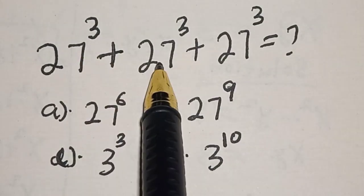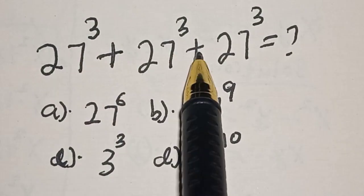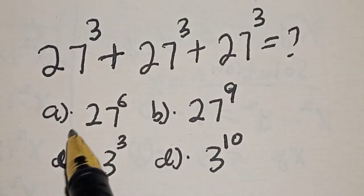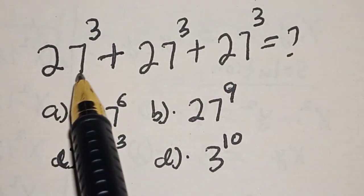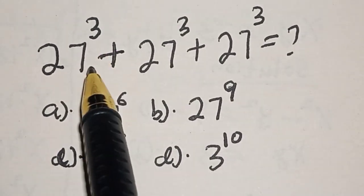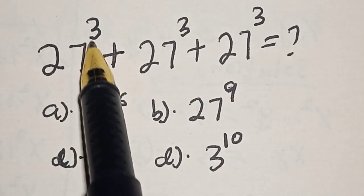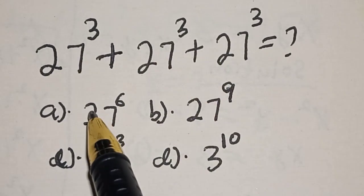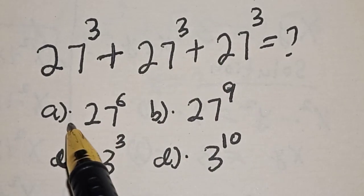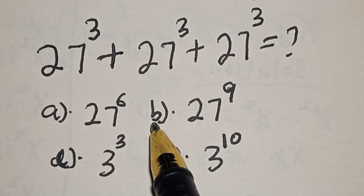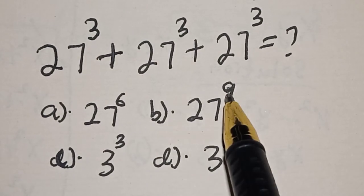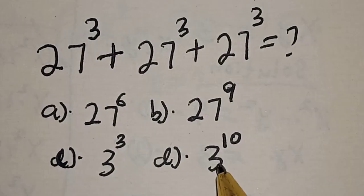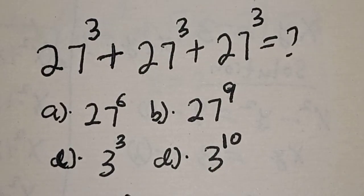Hi everyone, welcome to my class. In this class we want to evaluate this sum of powers problem: 27 raised to power 3 plus 27 raised to power 3 plus 27 raised to power 3. The options are: A is equal to 27 raised to power 6, B is equal to 27 raised to power 9, C is equal to 3 raised to power 3, and D is equal to 3 raised to power 10.